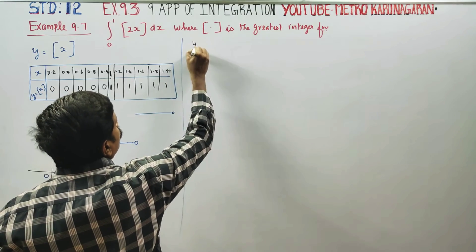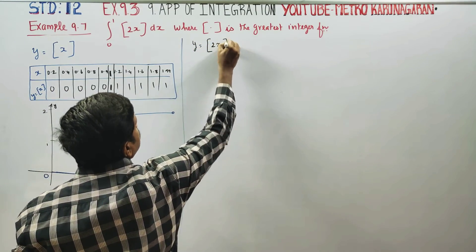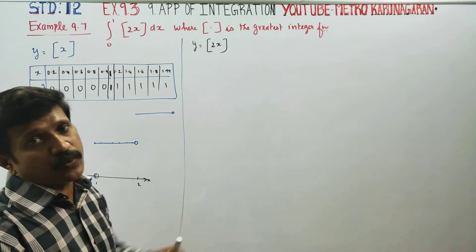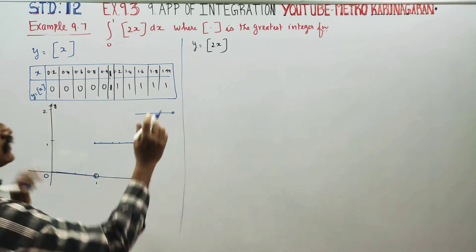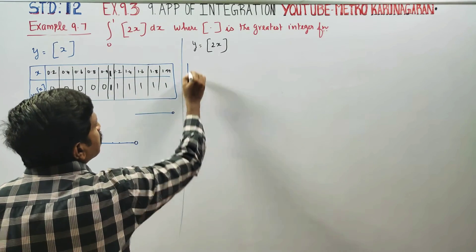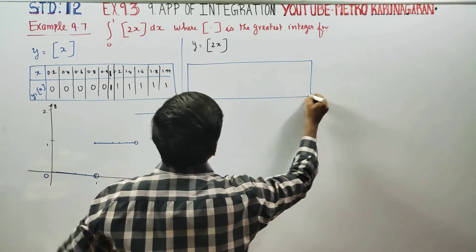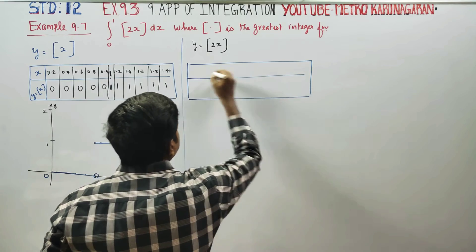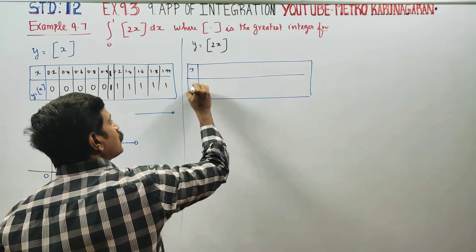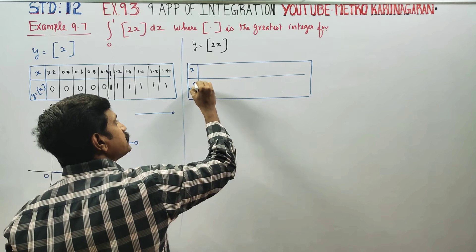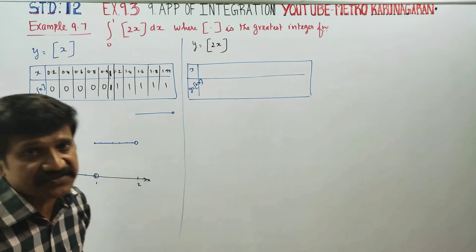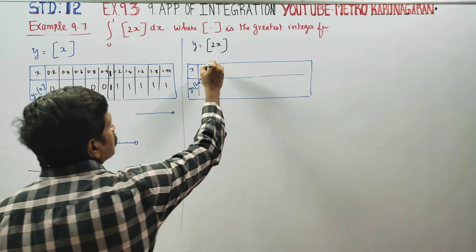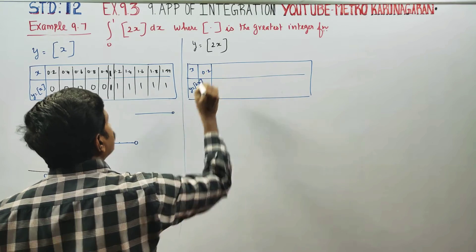Now, y is equal to the greatest integer function of 2x. I am going to find a graph for y equal to GIF(2x) in the same way. I am going to take some values: 0.2, 0.4, 0.5, 0.8.